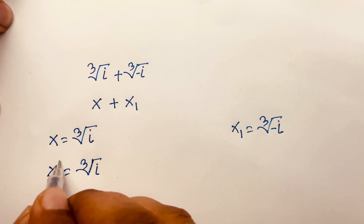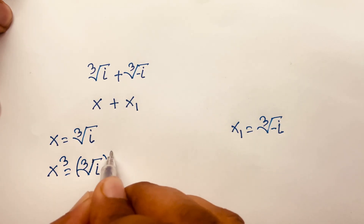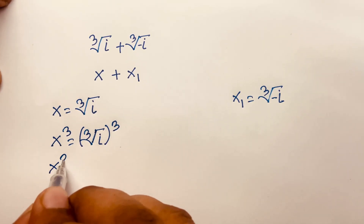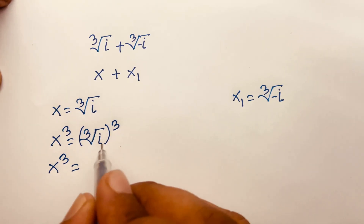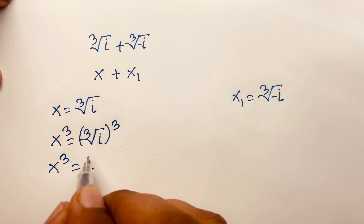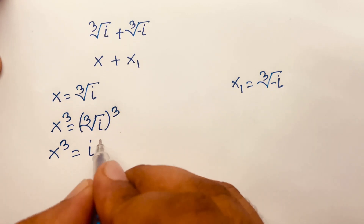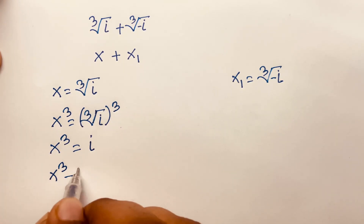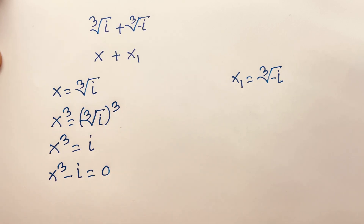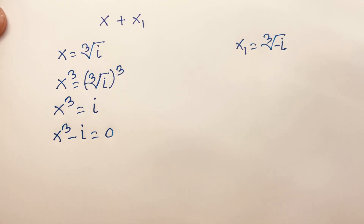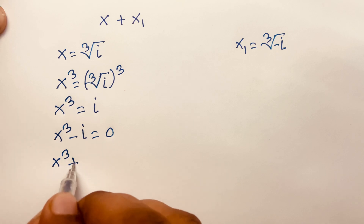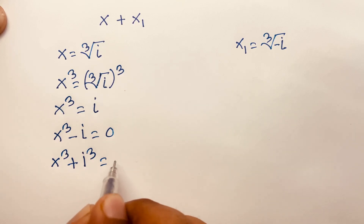If I cube both sides, x cubed equals i, since the cube and cube root cancel. Then this equation becomes x cubed minus i equals zero.